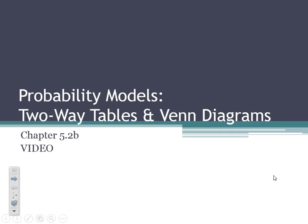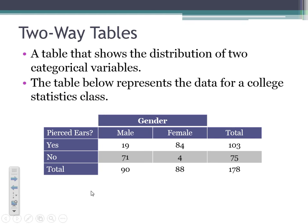Let's jump right into it. The first thing we need to do is flash back to Chapter 1 and remind you of what a two-way table is. A two-way table simply shows the distribution of two categorical variables. The table below represents data for a college statistics class. We have the data divided into two different categorical variables: gender, and whether or not they have their ears pierced. We can gather all kinds of information off of this table and use it to answer lots of probability questions.